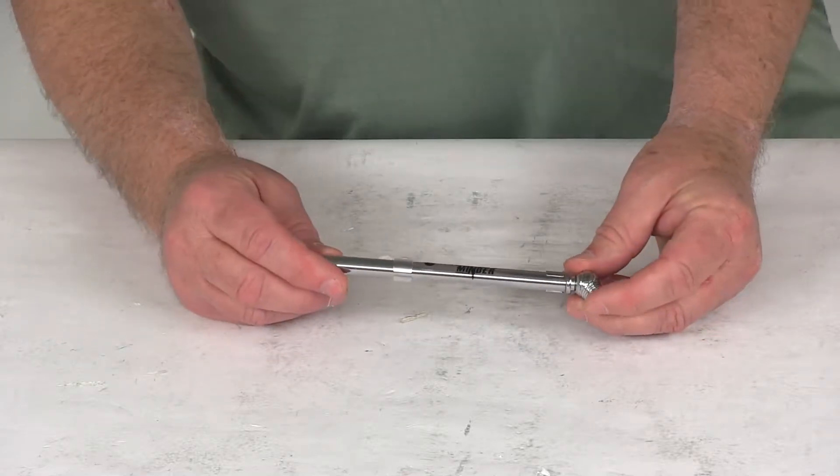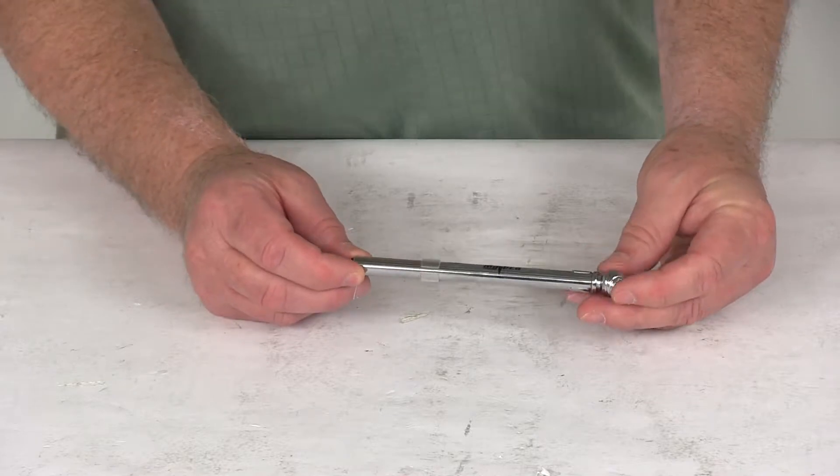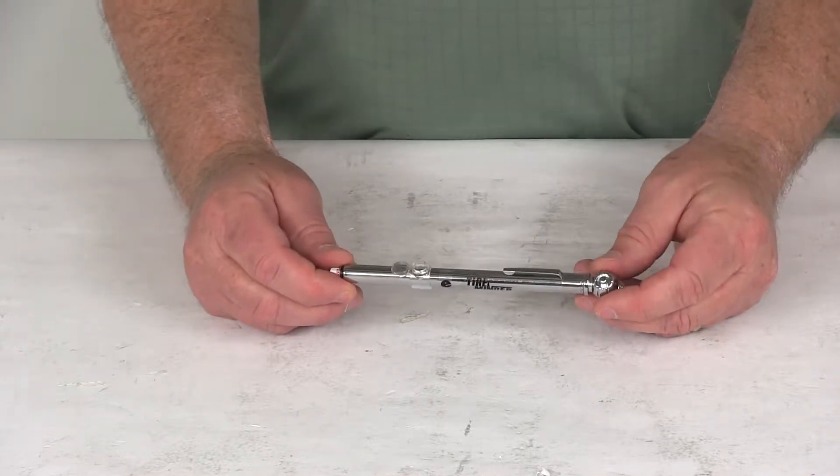Today we're going to take a look at the TireMinder Mechanical Pencil Style Tire Pressure Gauge. This tire gauge offers a plus or minus 2 psi accuracy.